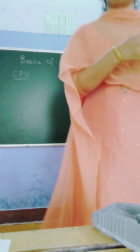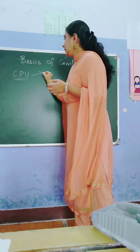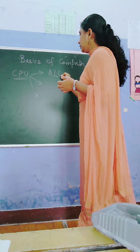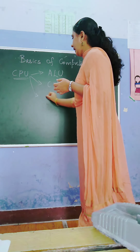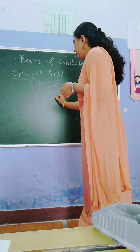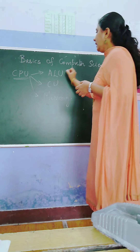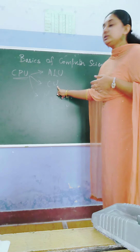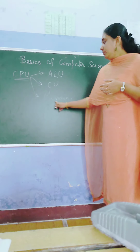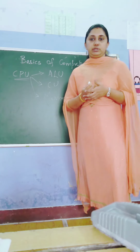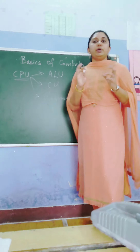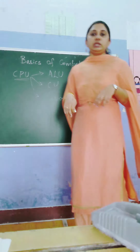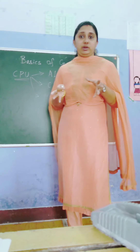CPU is categorized or divided into three headings: ALU, CU, and Memory. ALU stands for Arithmetic Logic Unit. CU stands for Control Unit. Memory stands for the storage device of the computer. ALU performs the major arithmetic and logic operations. Control Unit controls and executes the programs.